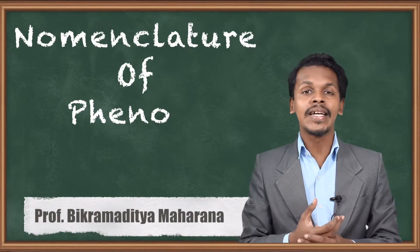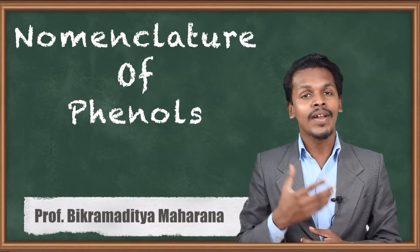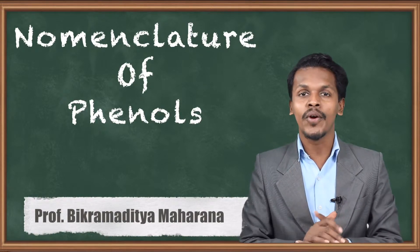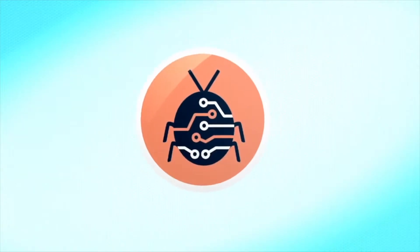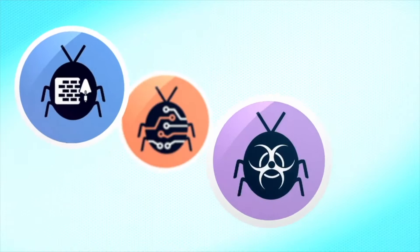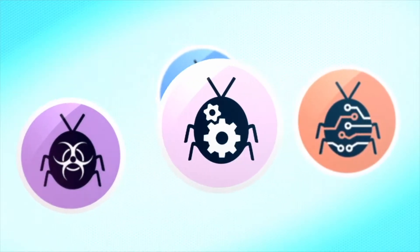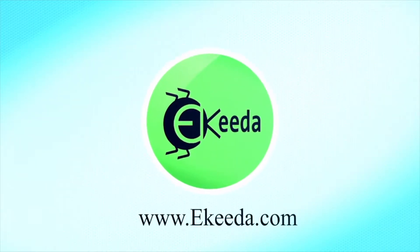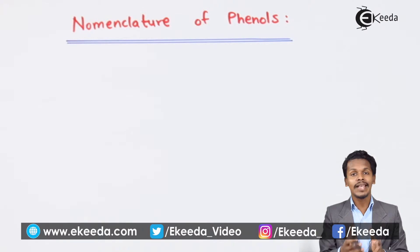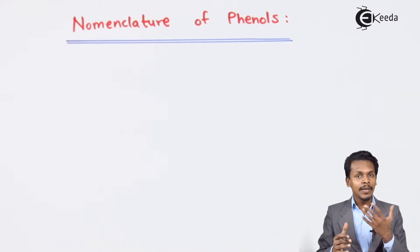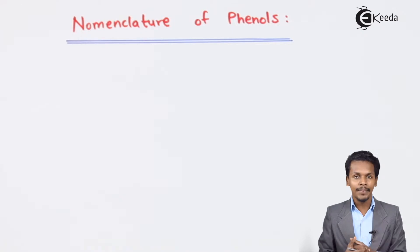Hello friends. In the previous lecture we understood what phenols are and their classification. Now in this topic we are going to talk about the nomenclature of phenol. There are two systems: the common name system as well as the IUPAC system to give nomenclature to a certain compound.